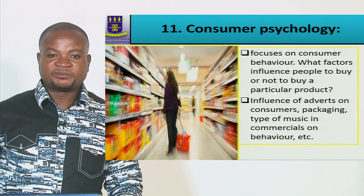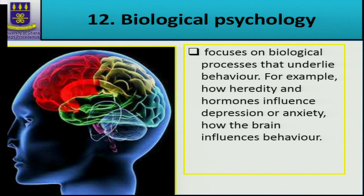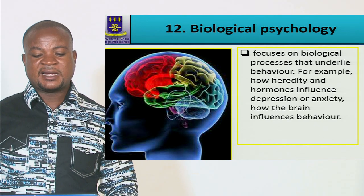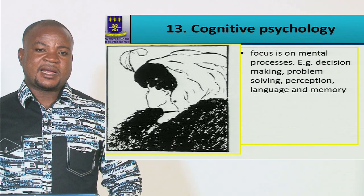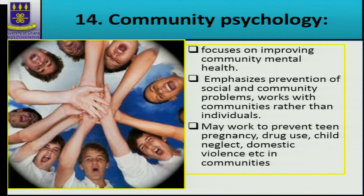Consumer psychology focuses on consumer behavior — what factors influence people to buy or not buy a particular product, including the influence of advertising, packaging, and music in commercials. Biological psychology focuses on the biological processes that underlie behavior: how heredity and hormones influence depression and anxiety, and how the brain functions to influence behavior. Cognitive psychology focuses on mental processes — decision making, problem solving, perception, language, and memory, such as why some people forget things quickly and others do not.